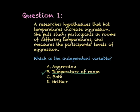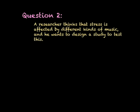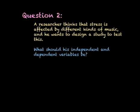Later on, we read that the researcher measured the levels of aggression, which is a big clue that aggression is the dependent variable and not the independent variable. Now, for question two: a researcher thinks that stress is affected by different kinds of music, and he wants to design a study to test this. What should his independent and dependent variables be?